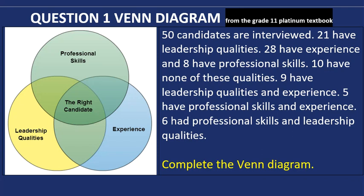Let's look at the information. We are told that a total of 50 candidates are interviewed. 21 of these candidates have leadership qualities, 28 have experience, 8 have professional skills, and 10 of them have none of these qualities. 9 candidates have leadership qualities and experience, 5 have professional skills and experience, and 6 have professional skills and leadership qualities. We need to complete the Venn diagram.